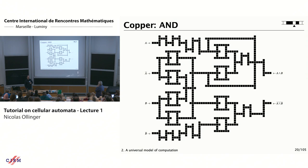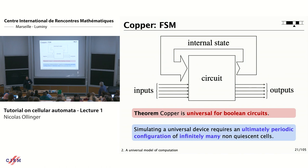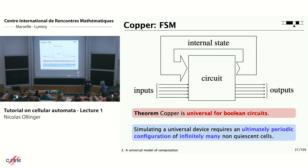Now we are done because we can do universal computation in circuits. You can encode any finite state machine as a circuit with your internal state entering the circuit on one side and the next state provided as an output. You also have wires that take the input values read from the exterior of your computing core. After one iteration of your finite state machine, you would get the output and the internal state you can wire back to the entrance of the circuit.